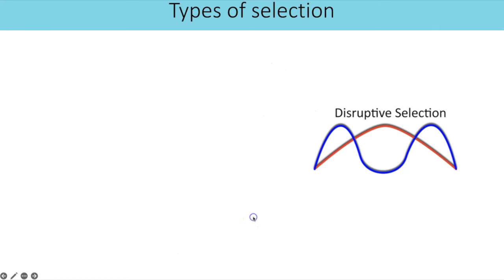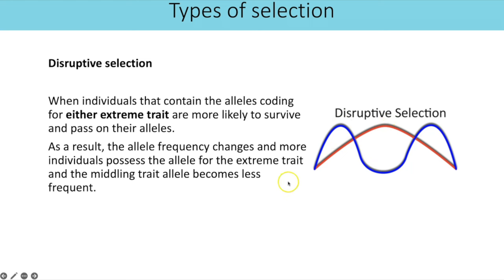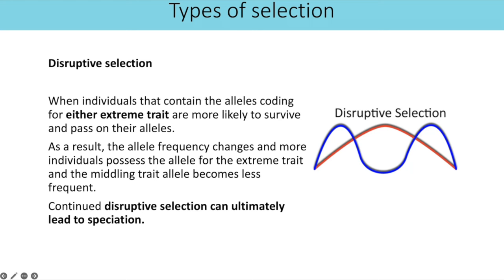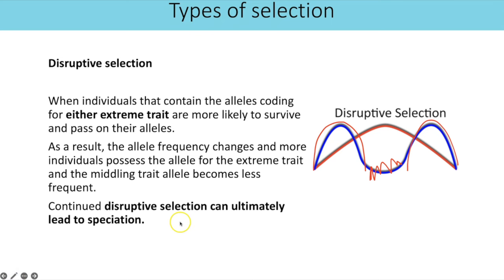The final type is disruptive selection, where both extreme traits provide the selective advantage. Individuals with either extreme trait are more likely to survive, reproduce and pass on those alleles, so both extremes become more common and the middling trait is almost completely lost. If this continues for many generations, it can ultimately lead to speciation — the two curves become separate gene pools so genetically different that they are counted as different species.